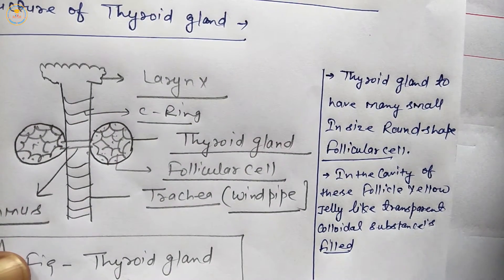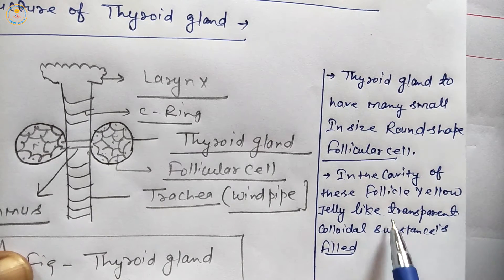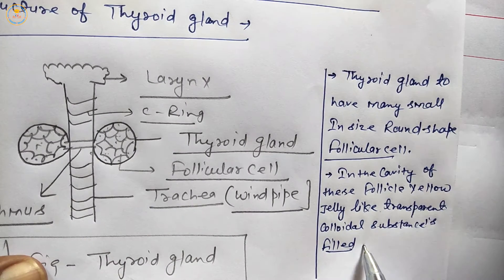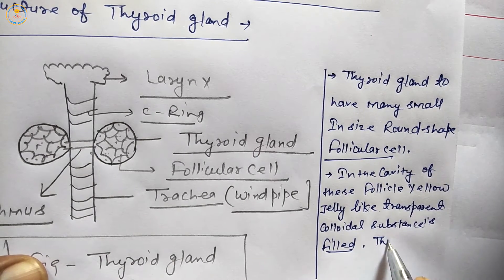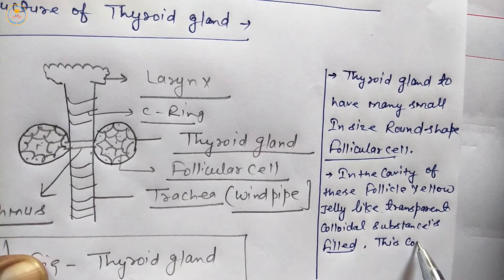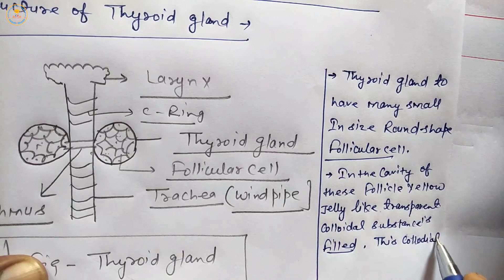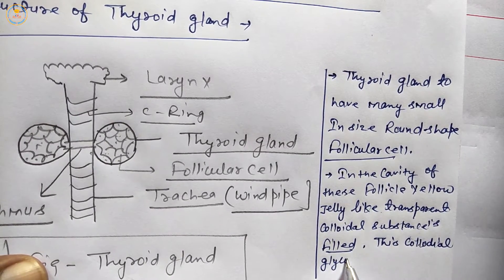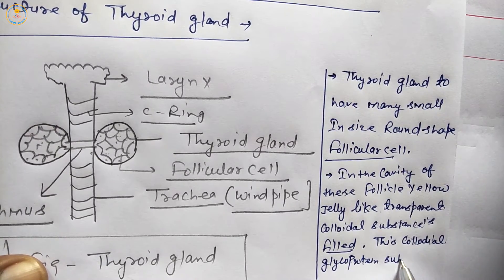Each follicular cell contains a yellow, jelly-like, transparent colloidal substance in its cavity. This colloidal substance is called iodothyroglobulin, which is a colloidal glycoprotein substance.